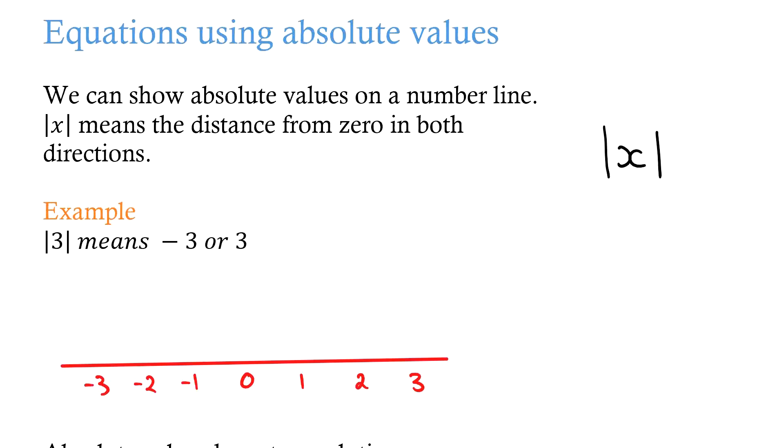So if we have the absolute value of 3, this means that we have a negative 3 or a 3 can be the solution. So what that means is I could have negative 3 here and I could have 3 here.